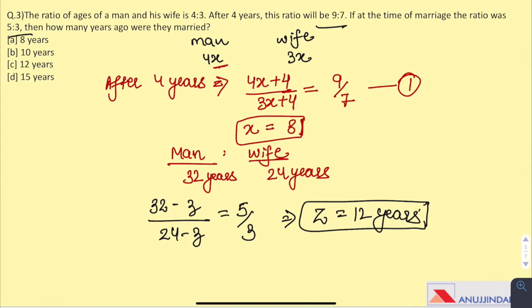In such questions, when the question asks about what happens in future, we add the years like we have added it here. And for the past, like at the time of marriage, then how many years ago were they married, then we have to subtract the years to get the answer which is 12 years in this case.